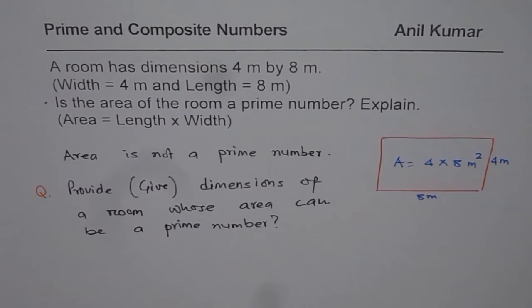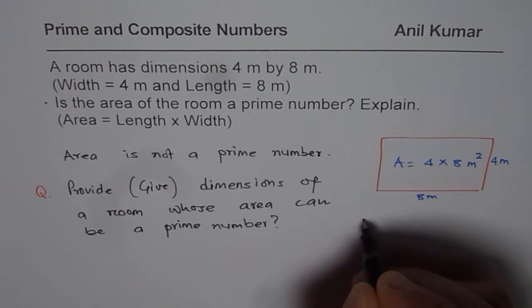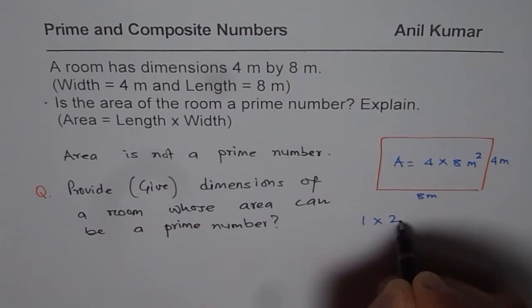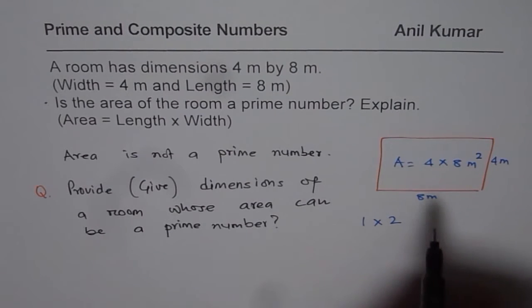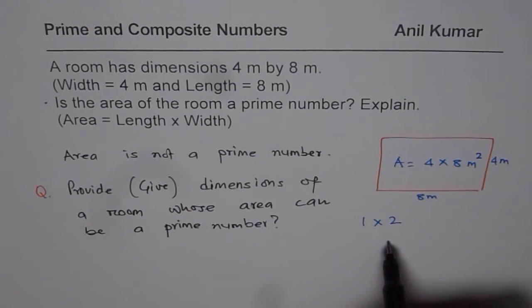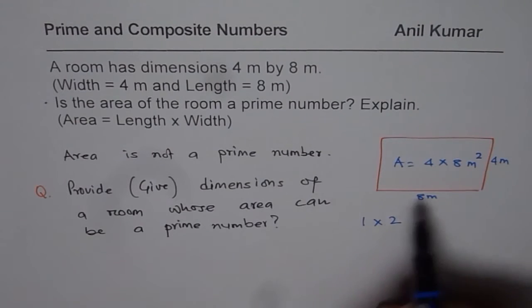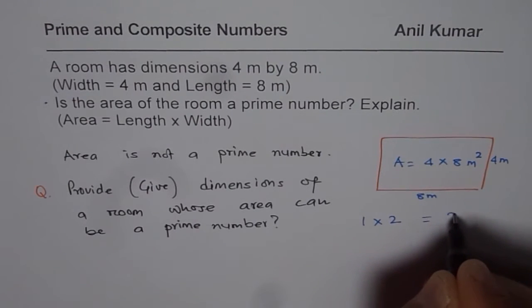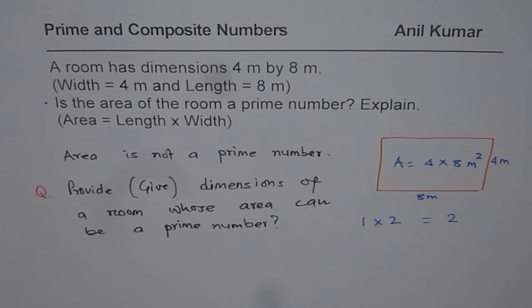The answer is, if the dimensions of the room is 1 times 2, if width is 1 meter and length is 2 meters, and when you multiply 1 and 2, you get a prime number 2.